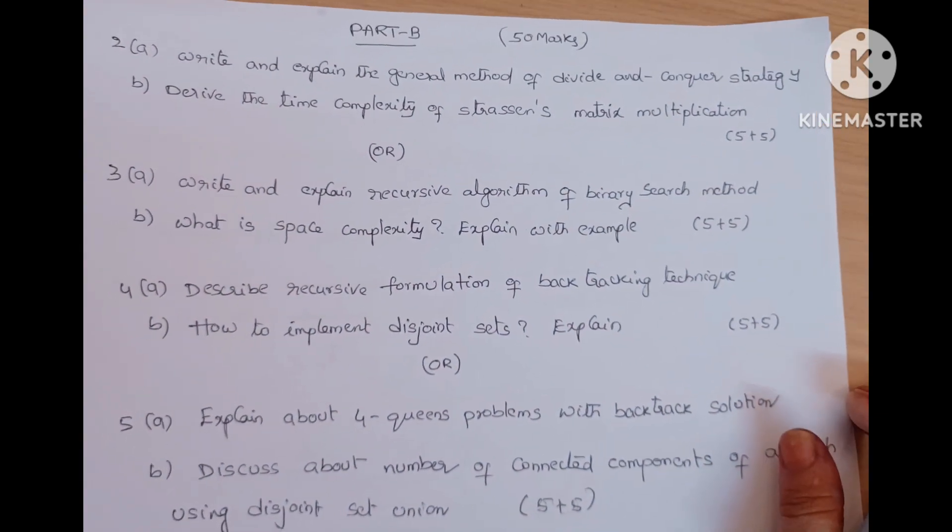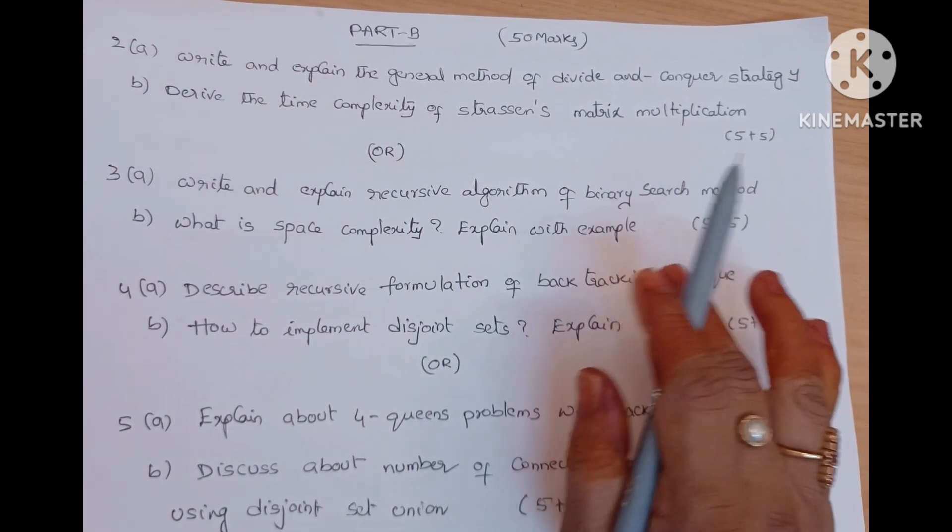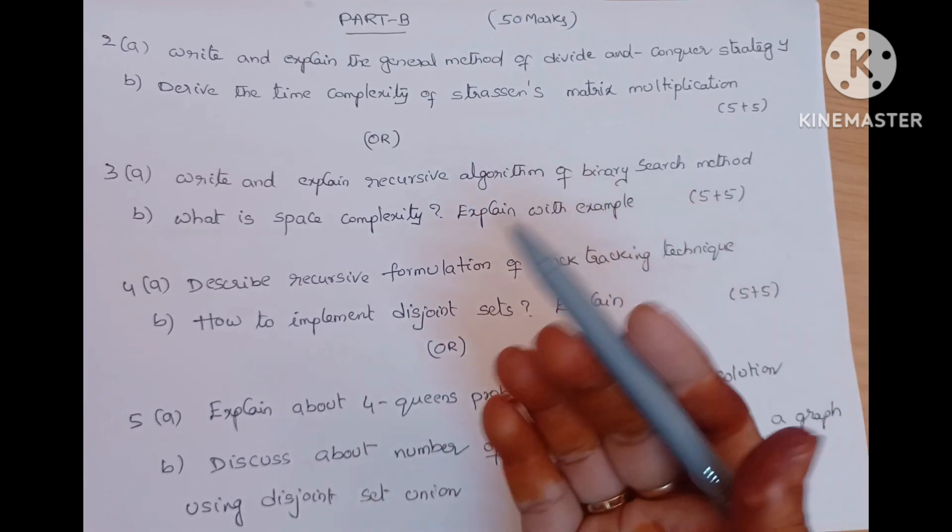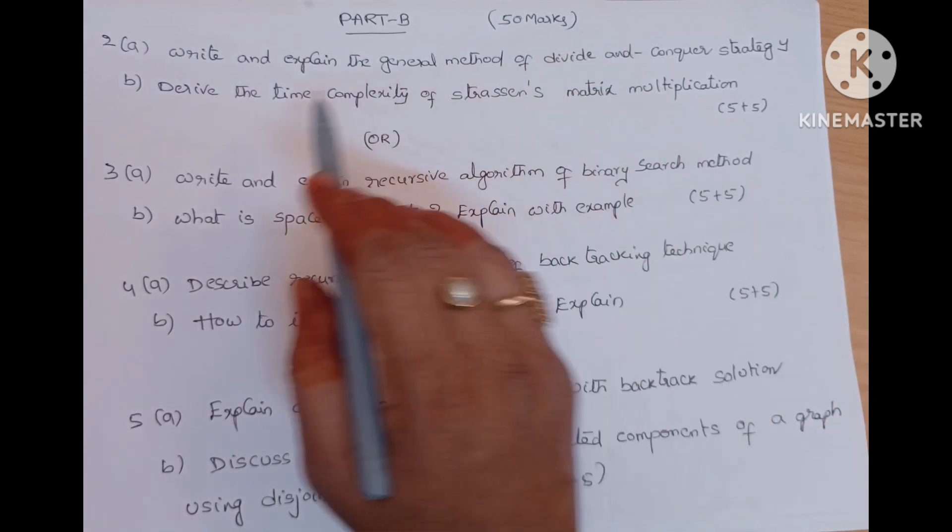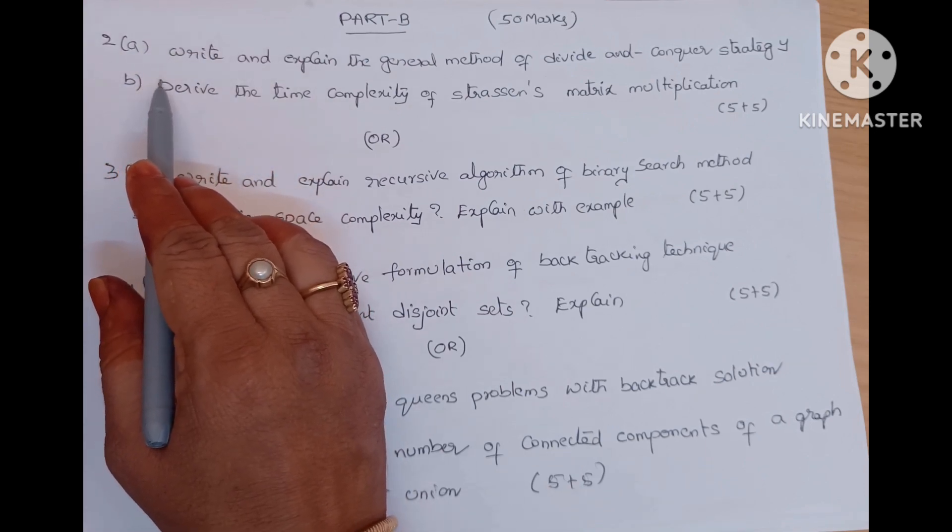Part B, each question carries 10 marks. Write any five, either internal choice. Both are coming from the same unit. Unit one either this question or that question. 50 marks question. Second question is coming from unit one.